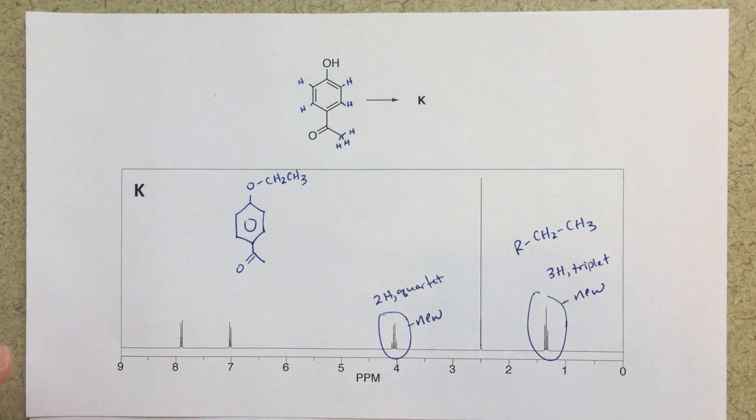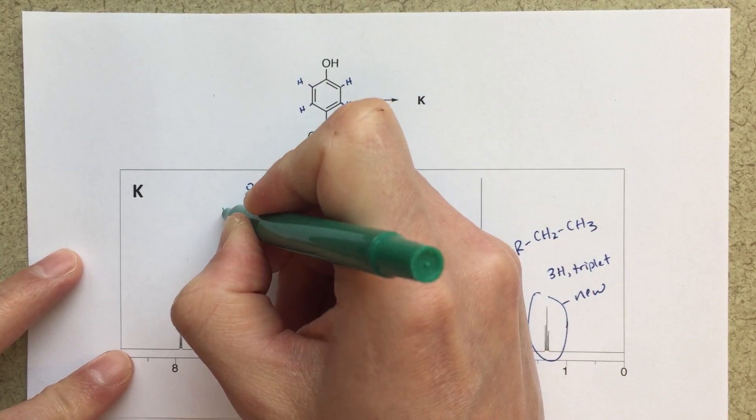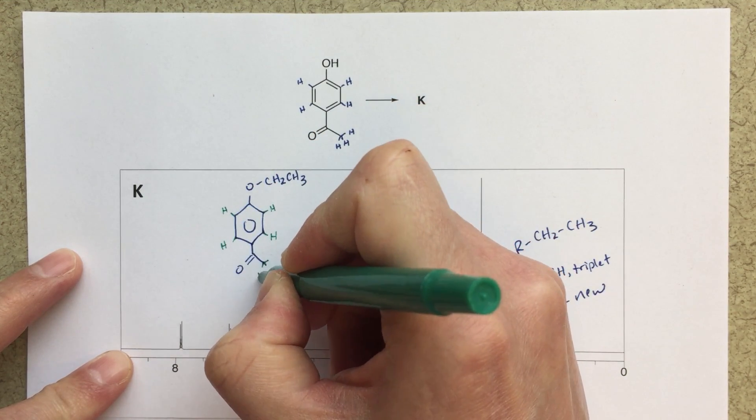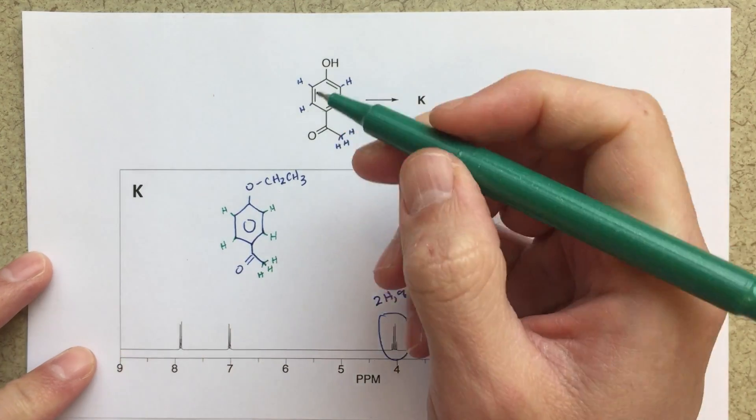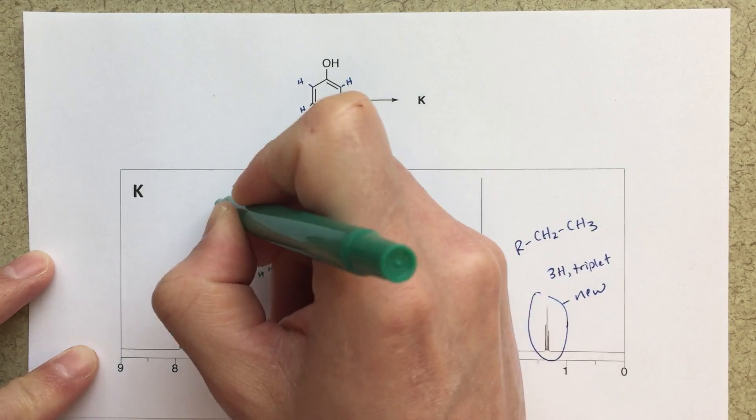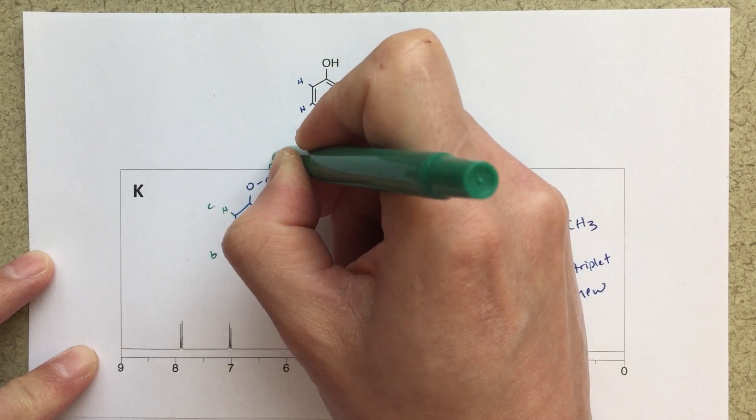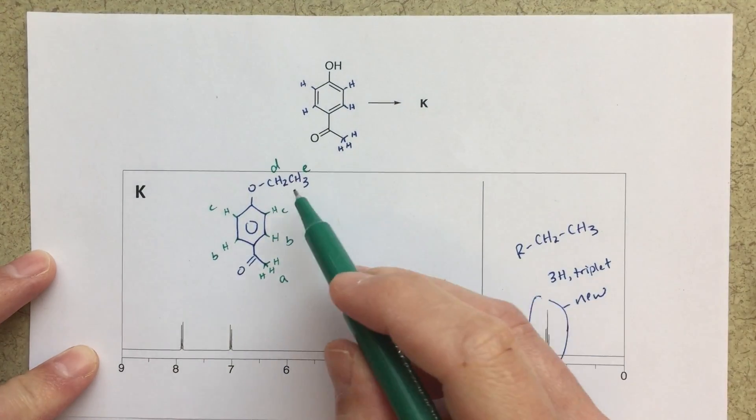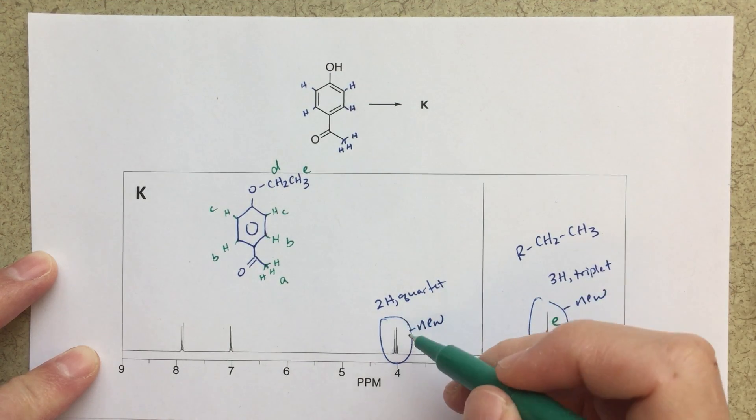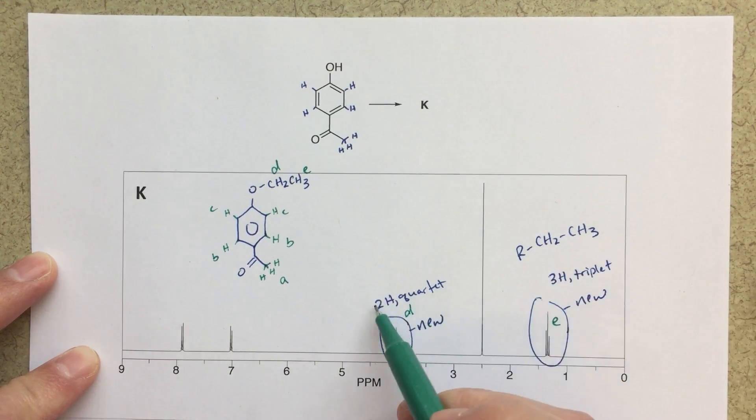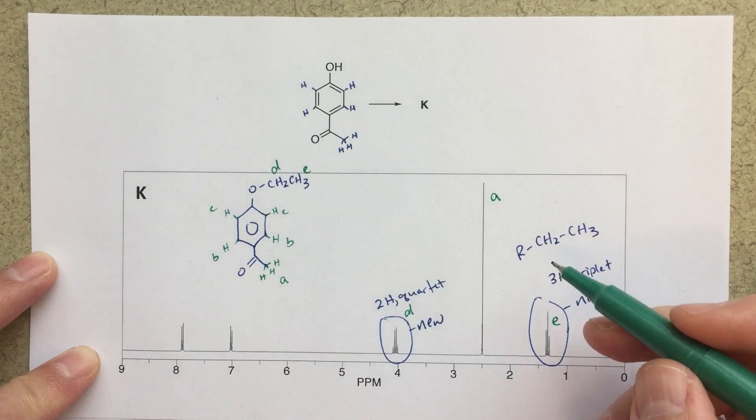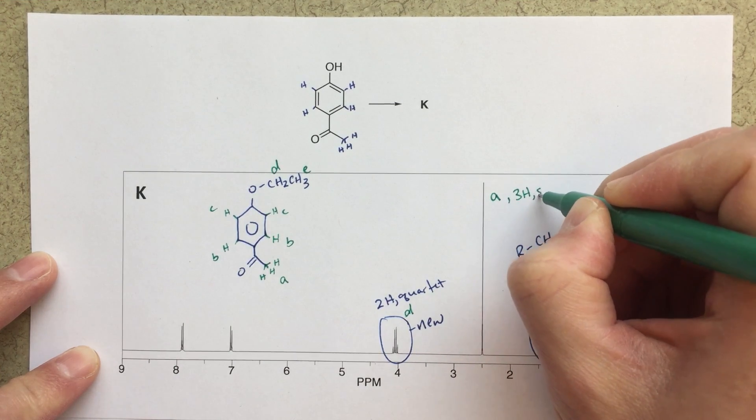So here let's go ahead and grab a different color to label our protons. So we'll call these H H H H and then I've got three of them here. And then what I will do, I'll go ahead and label these a. This is going to be b, c. We'll call these d and these e. So we've already talked about this ethyl group. So this would be our e protons, our three H triplet. This will be our d protons, a two H quartet. This is clearly our a, three H singlet.